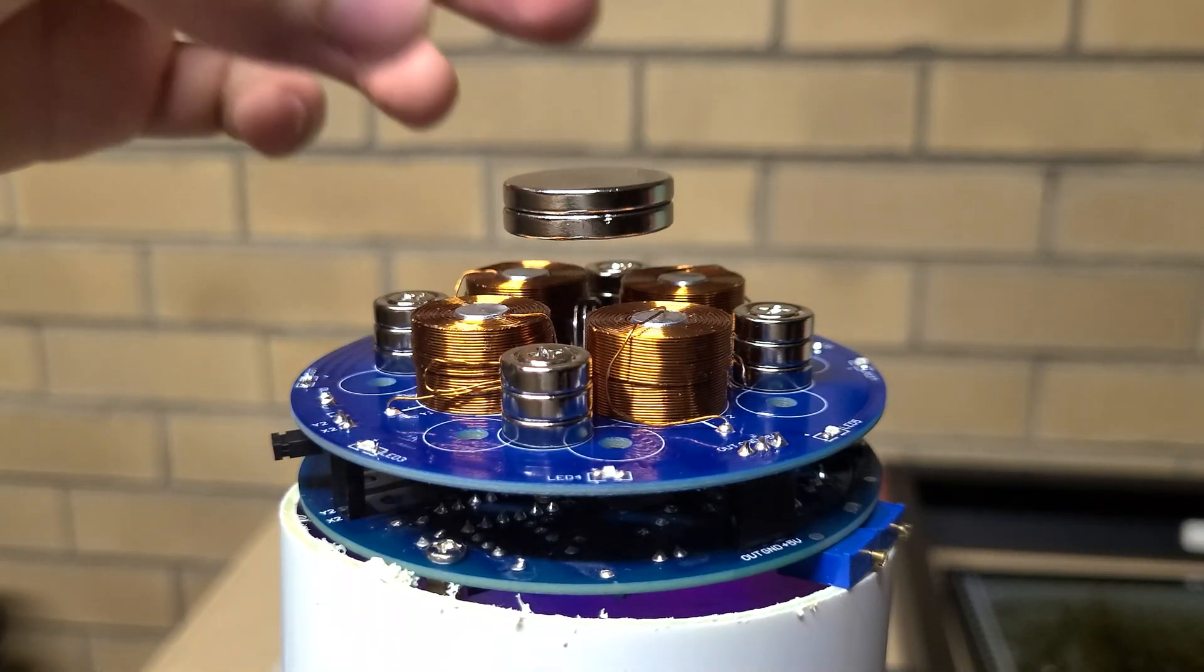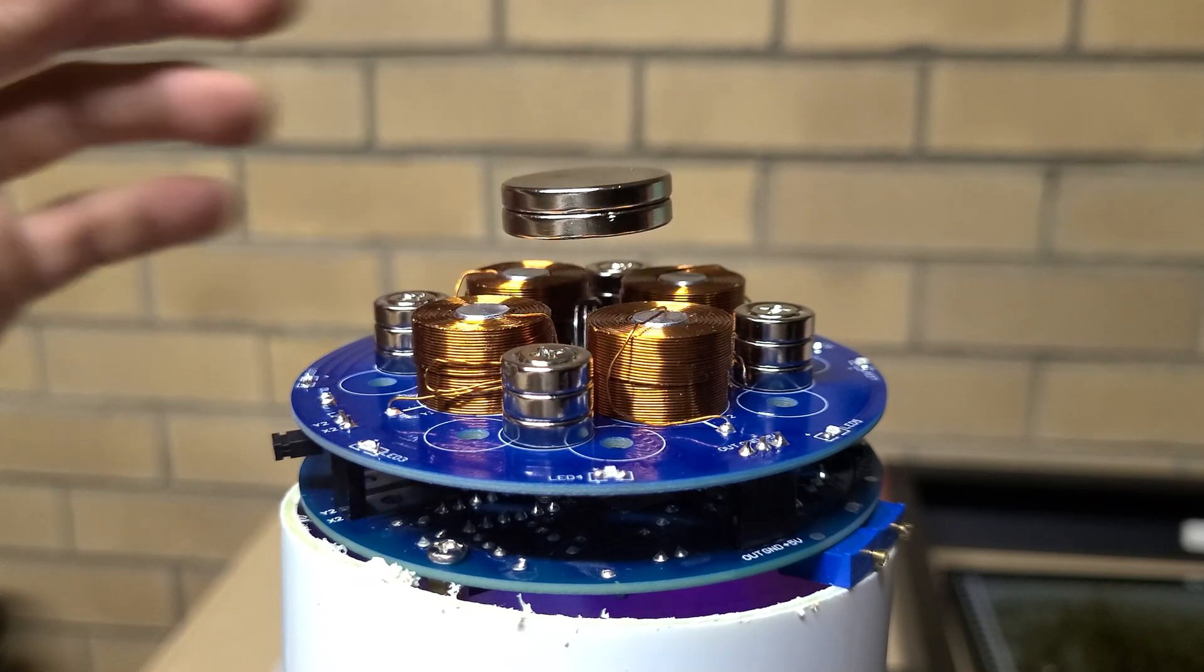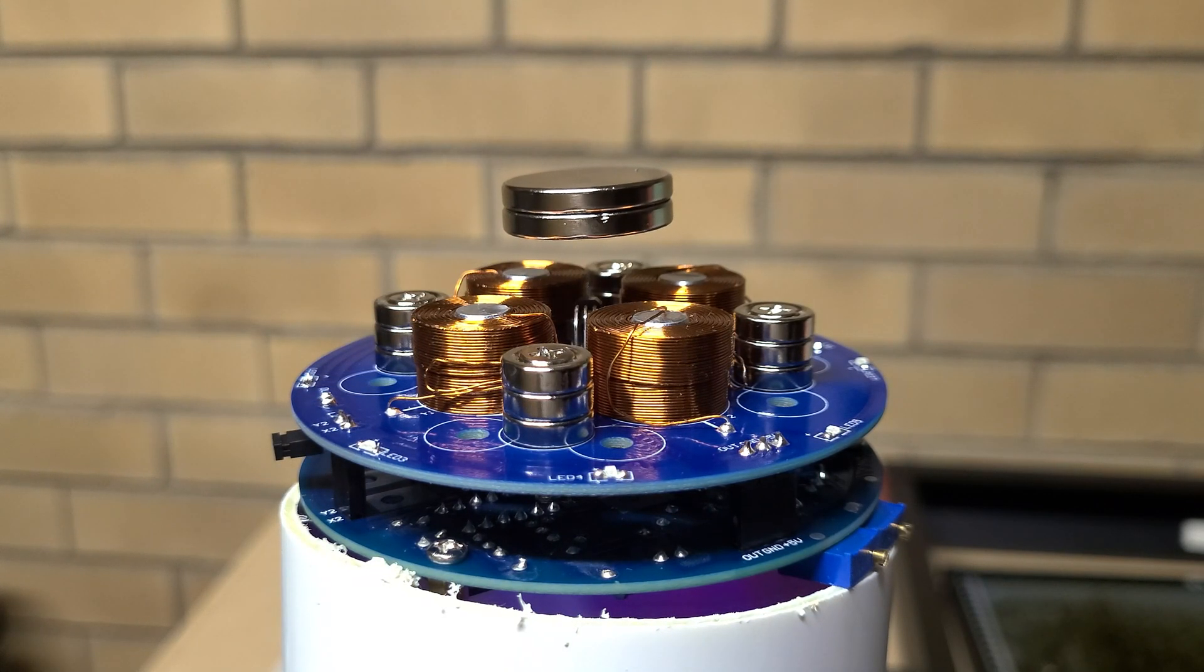So the way that works is you just place that magnet in the middle and you can see that is now spinning and rotating around and is now purely levitating off of that magnetic force.